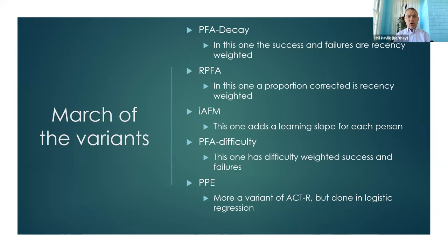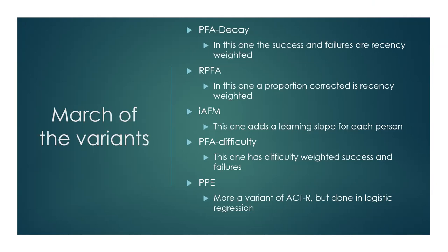PFA decay was an early example of this proliferation in what I call the march of the variants. In PFA decay, the successes and failures are recency-weighted — you weight them more if they happened more recently. Our PFA uses a proportion of prior correct for the KC rather than raw counts, also recency-weighted, and it works a little better than PFA decay in some tests. IAFM adds a learning slope for each person; PFA-difficulty uses difficulty-weighted success and failure counts.